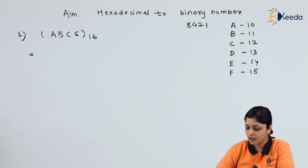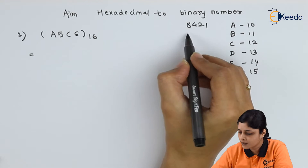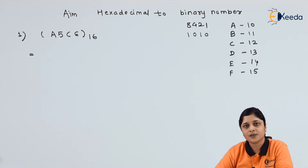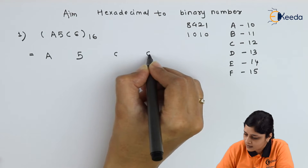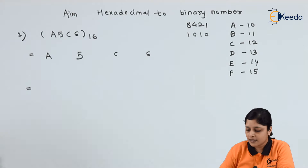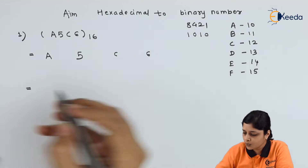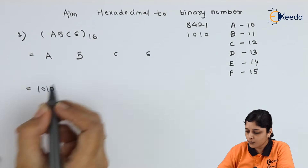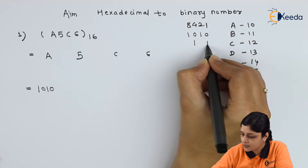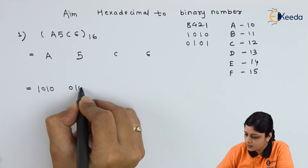First, write down A5C6 with space. For A, the decimal value is 10, and 8 plus 2 gives you 10, so the binary is 1010. For 5, 4 plus 1 gives you 5, so binary is 0101.